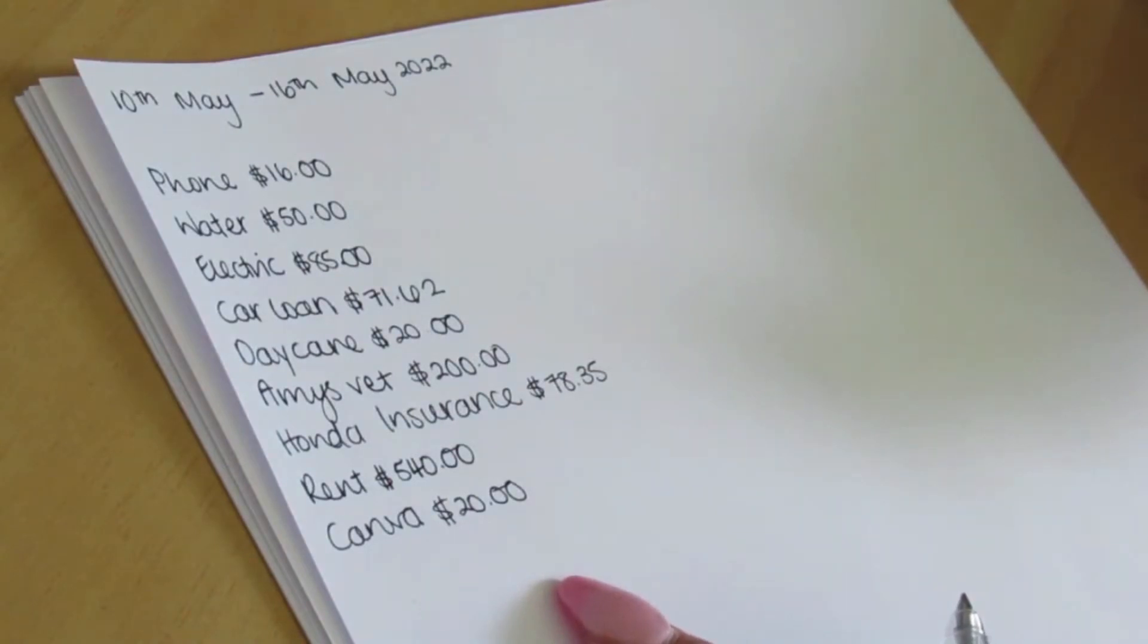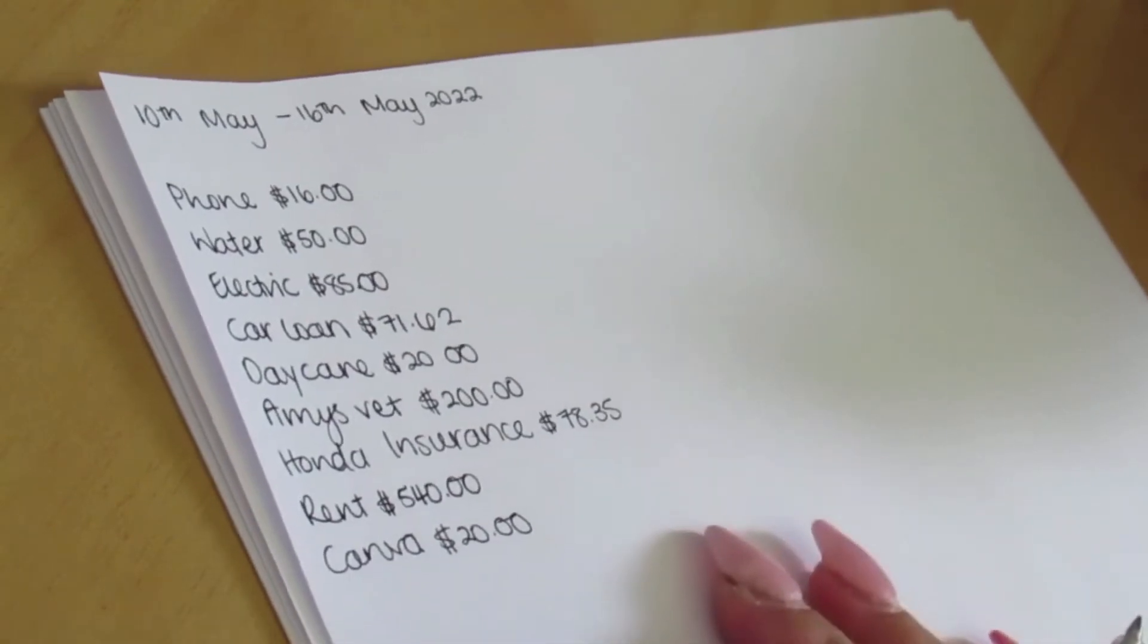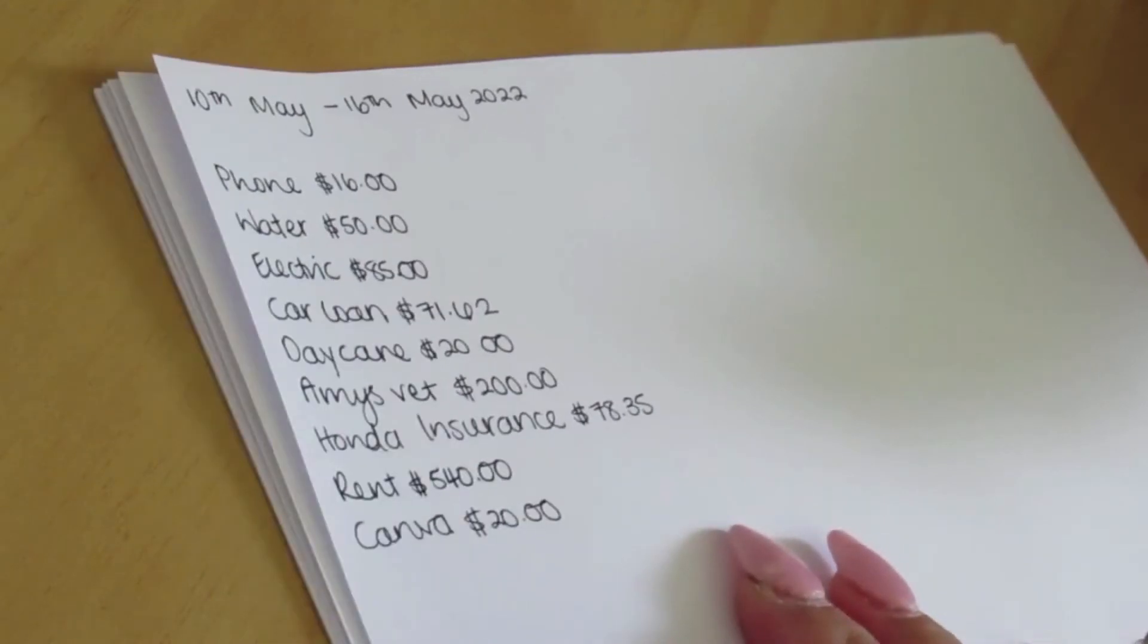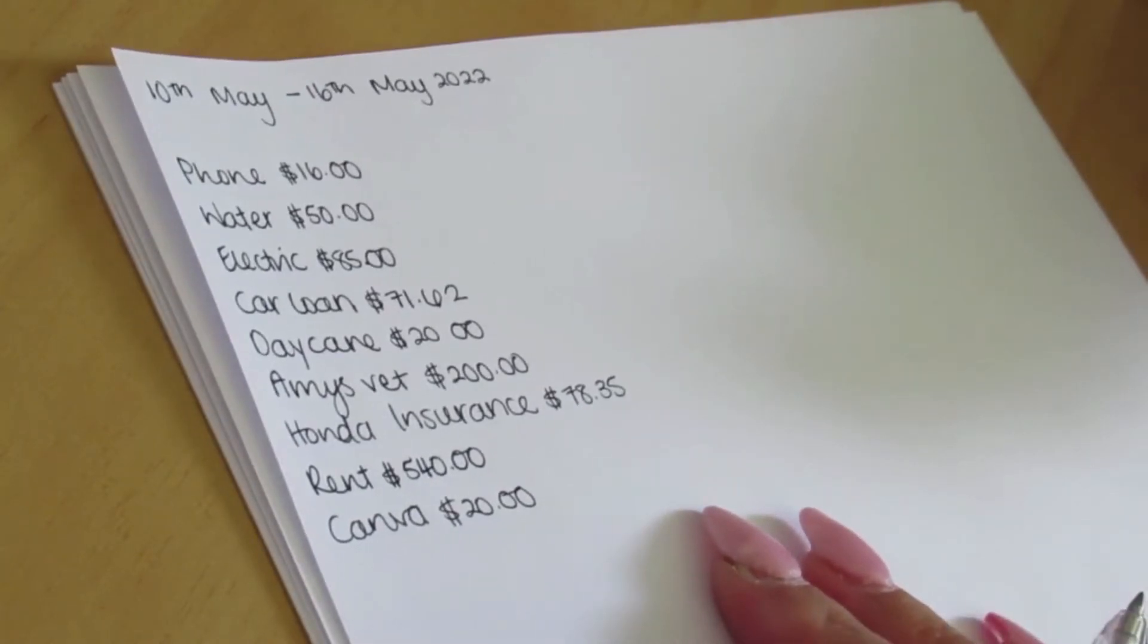For Canva that's about $20 a month, so I'm also going to be adding that on so I can do some editing, some thumbnails, and that sort of thing. So this is what my budget is going to be looking like for next week, the 10th of May to the 16th of May, for the bills.